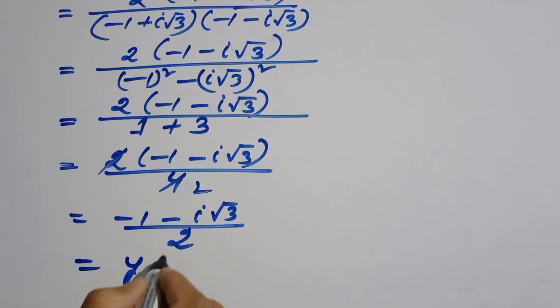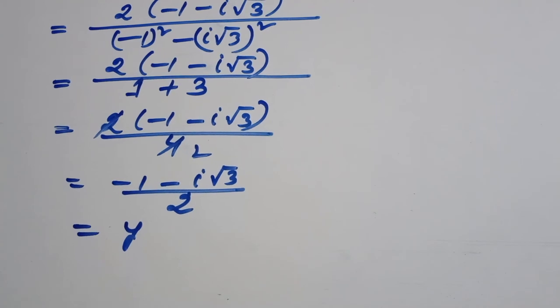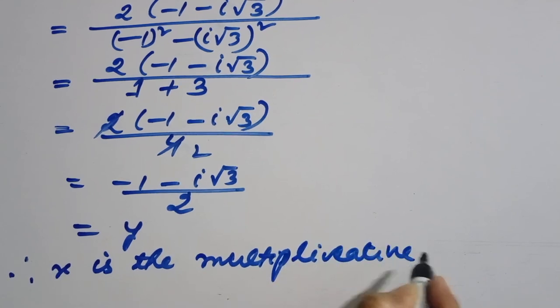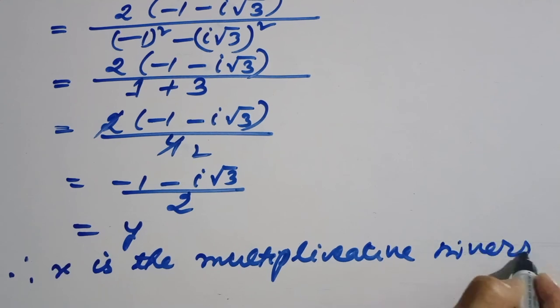Why will you come on? It was going to come here. There are finishing. And therefore, x is the multiplicative inverse of y.